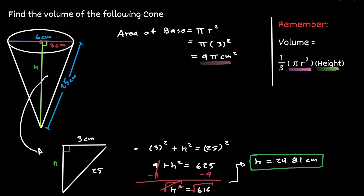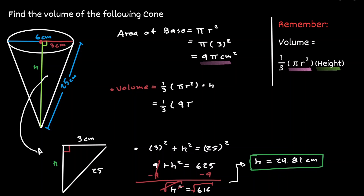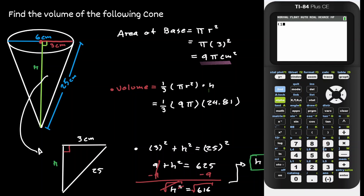Knowing the height, we can just plug it into our formula and obtain the volume of this cone. Where π r² is equivalent to 9π and the height we have an approximation of 24.81. Let's use our graphing calculator to approximate this value. So now we can say that the volume of this cone is approximately 233.82 centimeters cubed.